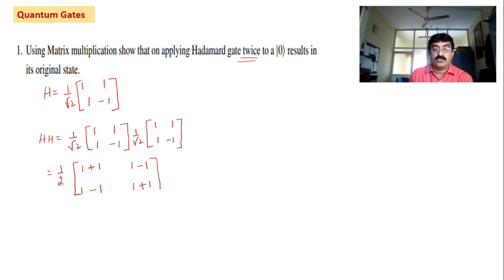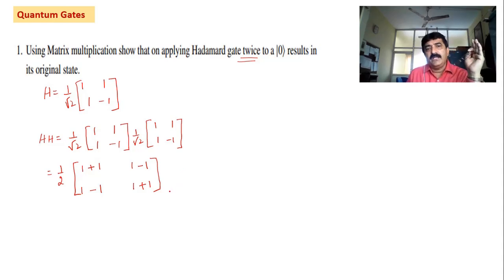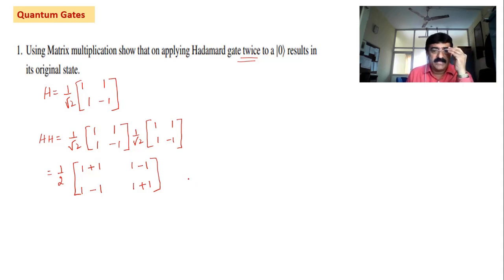I hope you know how to solve this particular step. I am going ahead because it is a very simple matrix multiplication. In quantum computation, matrix multiplication is very important and I hope you are all familiar with matrices — you studied these even in PUC. I don't think you will find any difficulty here. So that is equal to 1/2 times the matrix [2, 0; 0, 2].